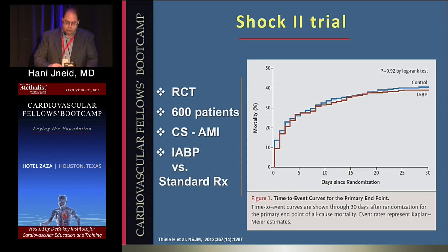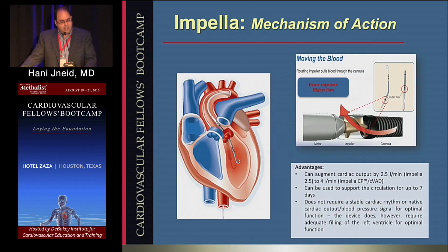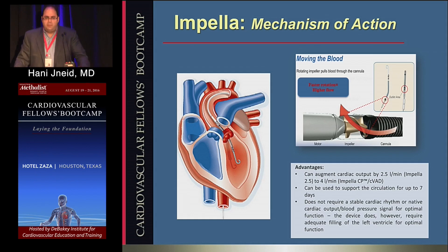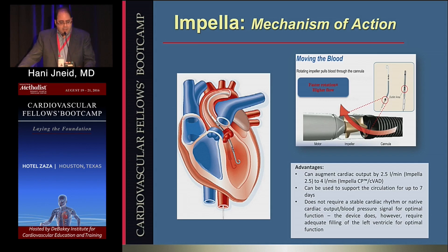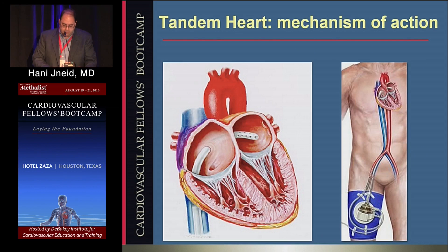The Impella is the newer device — just this year it received FDA approval for cardiogenic shock. The Impella CP delivers up to 3.5 liters per minute, providing better unloading of the left ventricle compared to the prior percutaneous Impella 2.5 at 2.5 liters per minute. It unloads the heart from the left ventricle to the aorta, and may have an advantage in increasing coronary perfusion. It is contraindicated in severe aortic insufficiency and LV thrombus, so always get an echocardiogram beforehand.